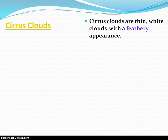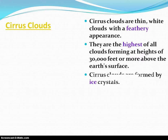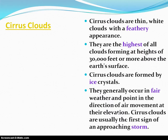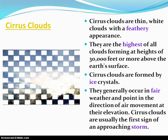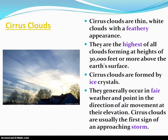Cirrus clouds are going to be more feathery, thin, and wispy in appearance. They're going to be our highest-forming clouds, forming the highest in the atmosphere. When you see these types of cirrus clouds — these thin, wispy clouds — they are an excellent indicator of possible storms approaching maybe a day or two away. So if you see some cirrus clouds like in this picture, those high-forming wispy clouds, that's a good indicator that within the next day or two you're going to see some type of storm develop in your area.